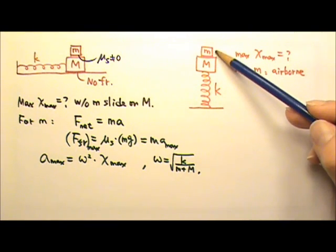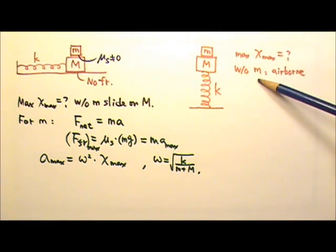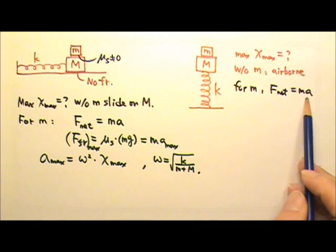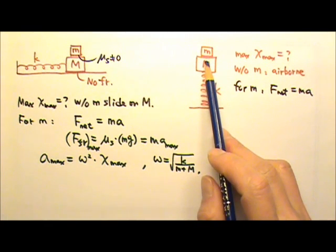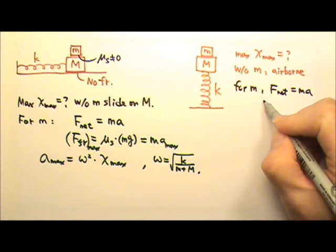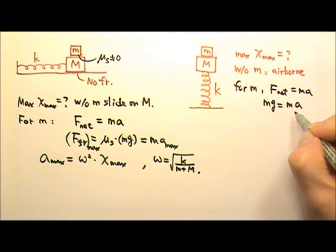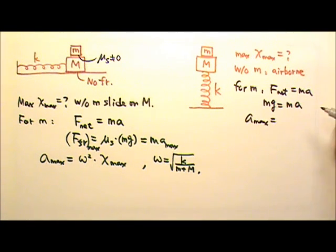In the next problem, little m is just sitting on top of big M. Find the maximum amplitude of oscillation they can have without having little m become airborne. Again, we write the net force equals m·a for little m. When little m is almost airborne, the normal force on little m is zero. At that point, the net force on little m is just its weight m·g, so m·g equals m·a, meaning a equals g. This acceleration is the maximum possible acceleration.